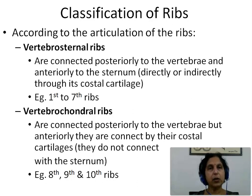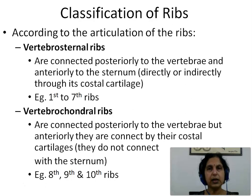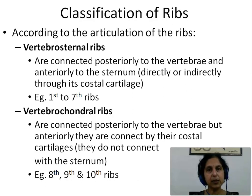We can also classify the ribs according to their articulation, and this has three types: vertebro-sternal ribs, vertebro-chondral ribs, and vertebral ribs. Vertebro-sternal ribs are connected posteriorly to the thoracic vertebrae and anteriorly to the lateral border of the sternum directly or indirectly through the costal cartilage — examples are the 1st to 7th ribs, the same as the true ribs. Vertebro-chondral ribs are connected posteriorly to the thoracic vertebrae but anteriorly they are connected by their respective costal cartilages to the costal cartilage of the rib above, and they do not connect with the sternum at all — examples being the 8th, 9th, and 10th ribs.